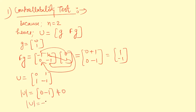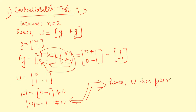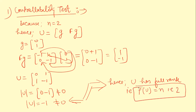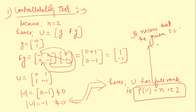Since the determinant of U is -1, which is not equal to 0, U has full rank — rank of U equals 2 = n. Hence the given state space model is controllable. Now let us check its observability.